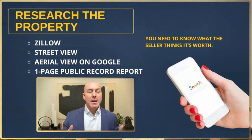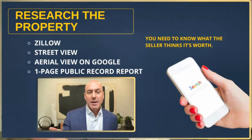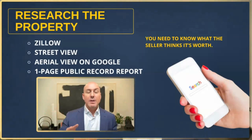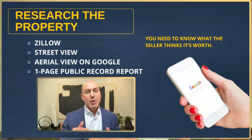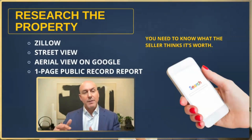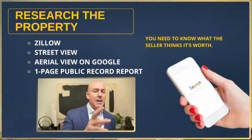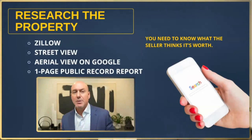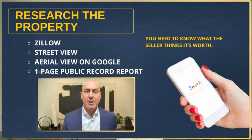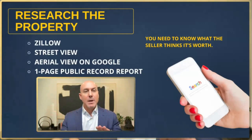If we have six closed comps and the data tells us they closed at $250 a square foot in the last six months, and the seller wants $350 a square foot, we're trying to get them to understand: if all the others closed at $250 on average, there are differences — pluses and minuses. This one had a three-car garage, you have a two-car garage. You put in gold flooring — it's beautiful — but this other one had silver floors. They all had their different bells and whistles.